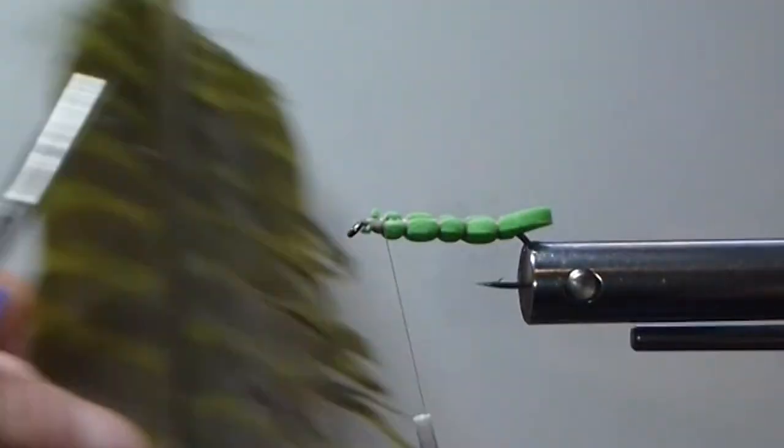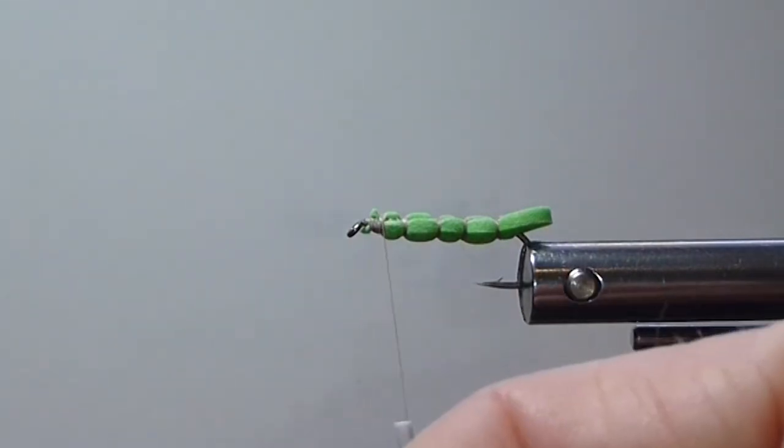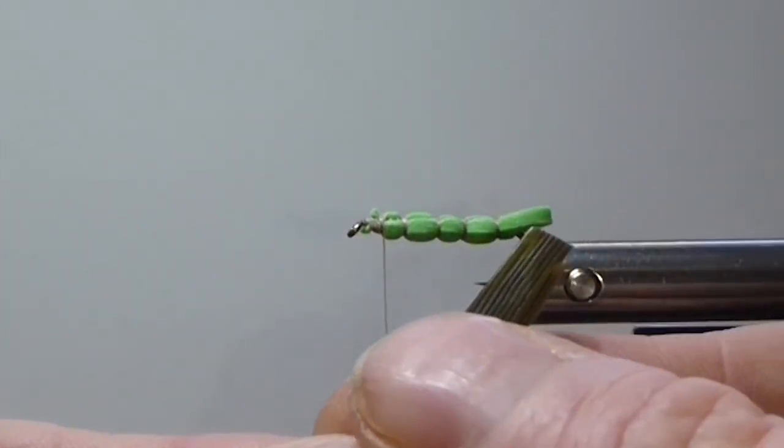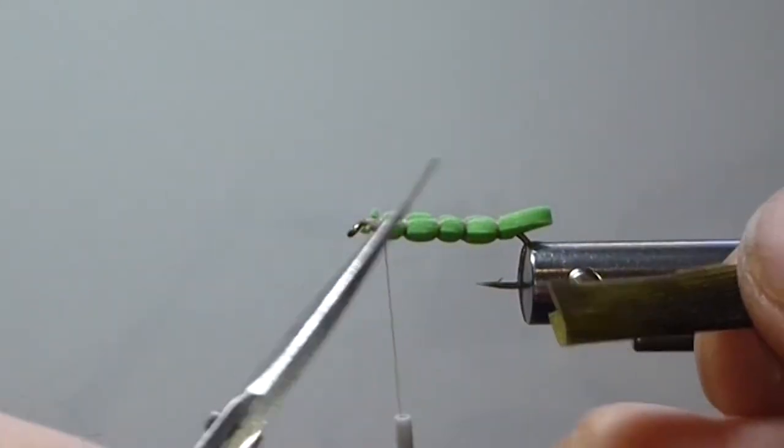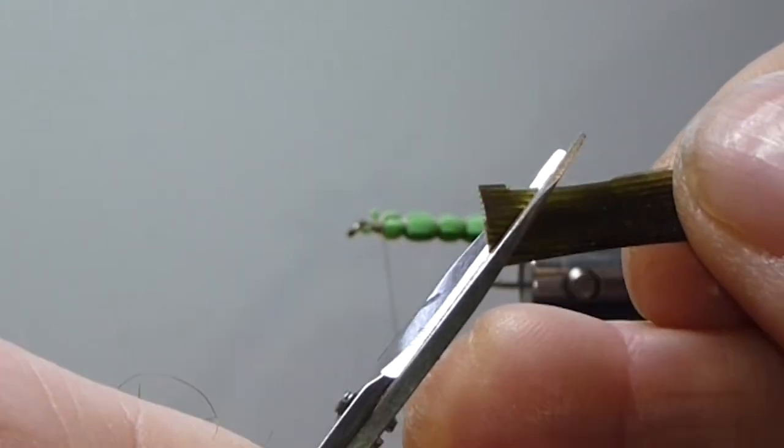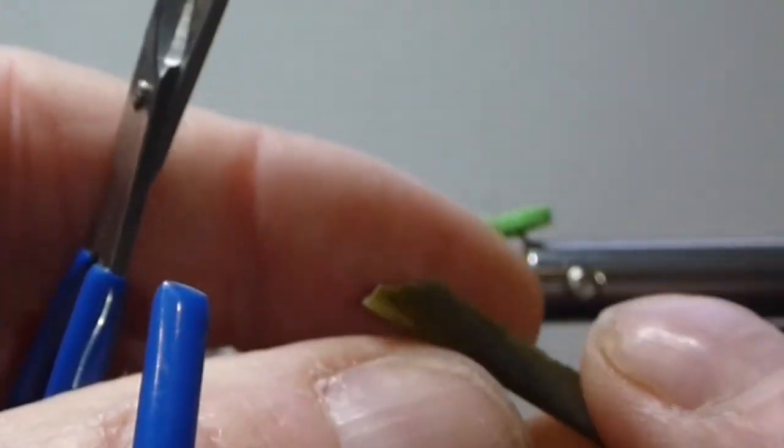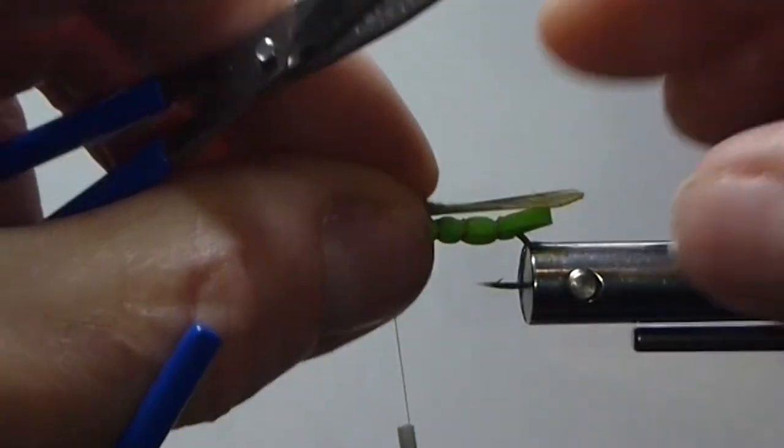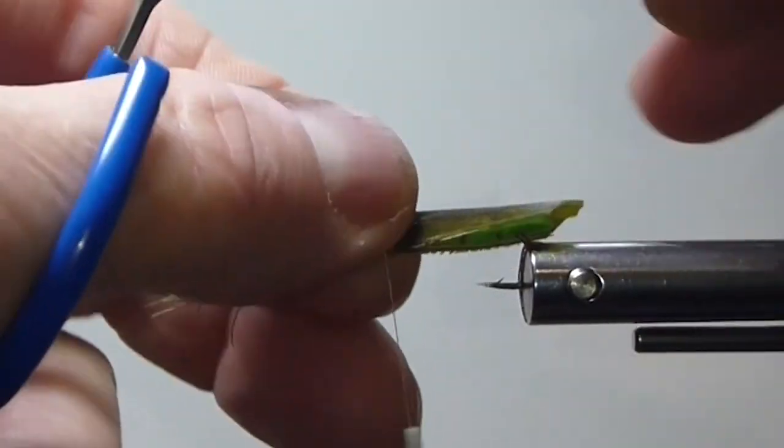And this one, I've put some flex cement on this turkey quill. So it'll stop it from coming apart on you when you go to cut it and tie it on. Hold its shape. Good flex cement. Now I just cut this at an angle. I'm going to put this over the top. My fly right to the bend.